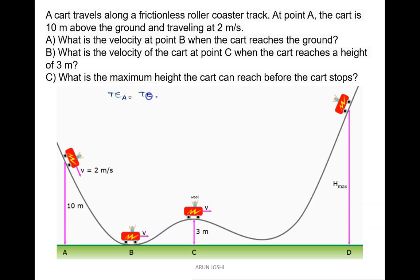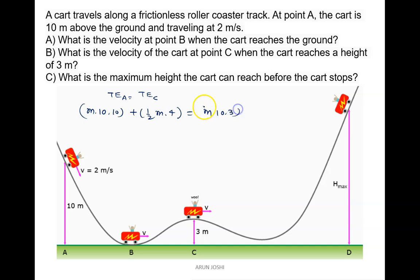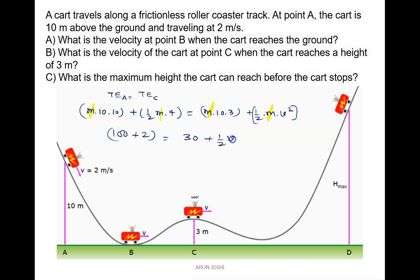Total energy at A: potential energy is m times 10 times 10, plus half m times 2 squared (which is 4). Total energy at C: potential energy is m times 10 times 3, plus half m v squared. Taking m common and canceling: 100 plus 2 equals 102, and 102 minus 30 equals 72, so half v squared equals 72, giving v squared = 144, and v = 12 meters per second.